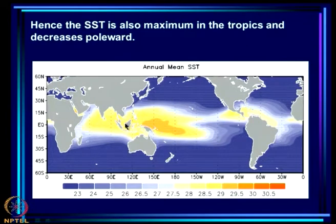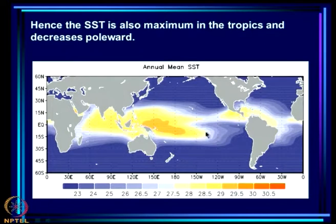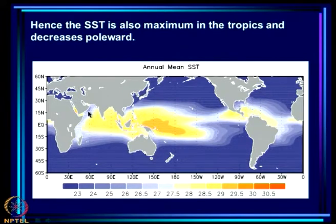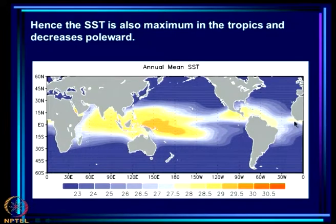Naturally, if we look at the annual mean sea surface temperature (SST), it is maximum in the tropical belt and decreases as we go poleward. There are differences within the same latitudinal band — for example, from west Pacific to east Pacific — and I will come to why they arise. But basically, the maximum sea surface temperature, like the incident solar radiation, is also maximum in the tropics and decreases poleward.